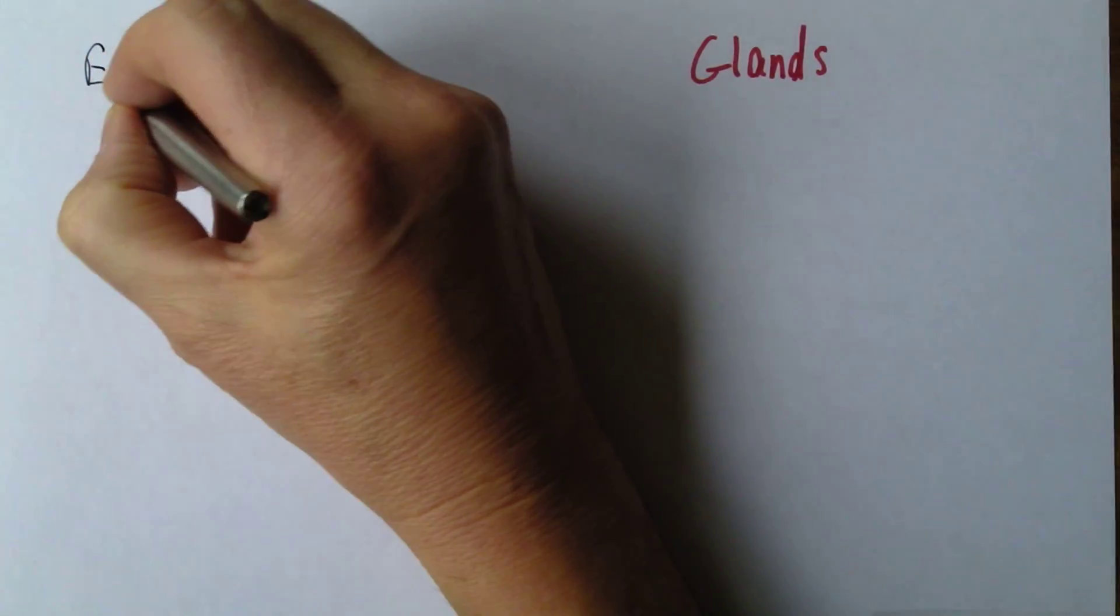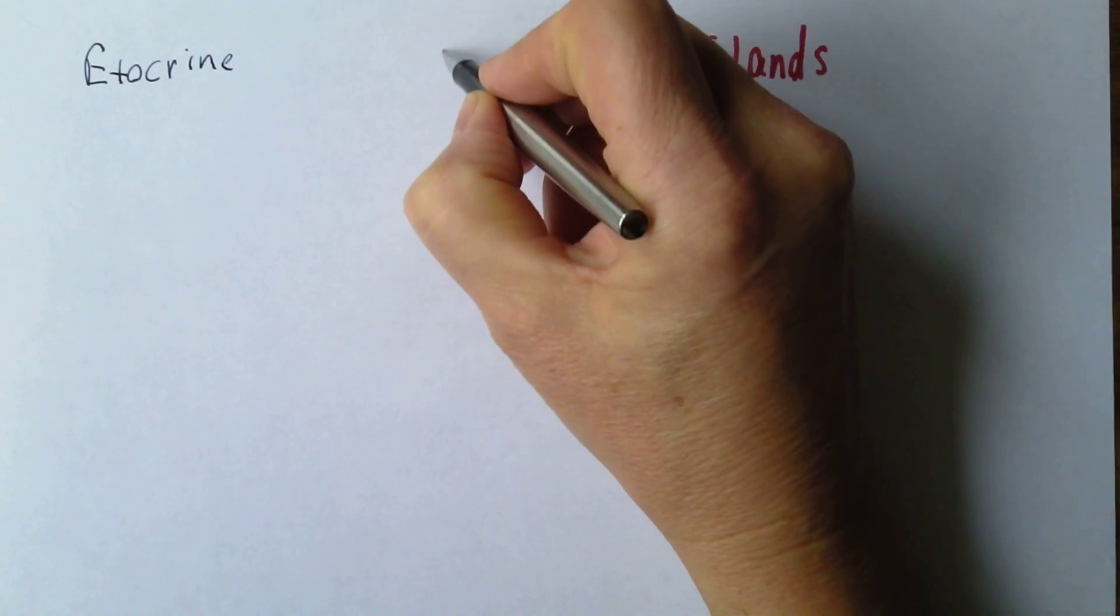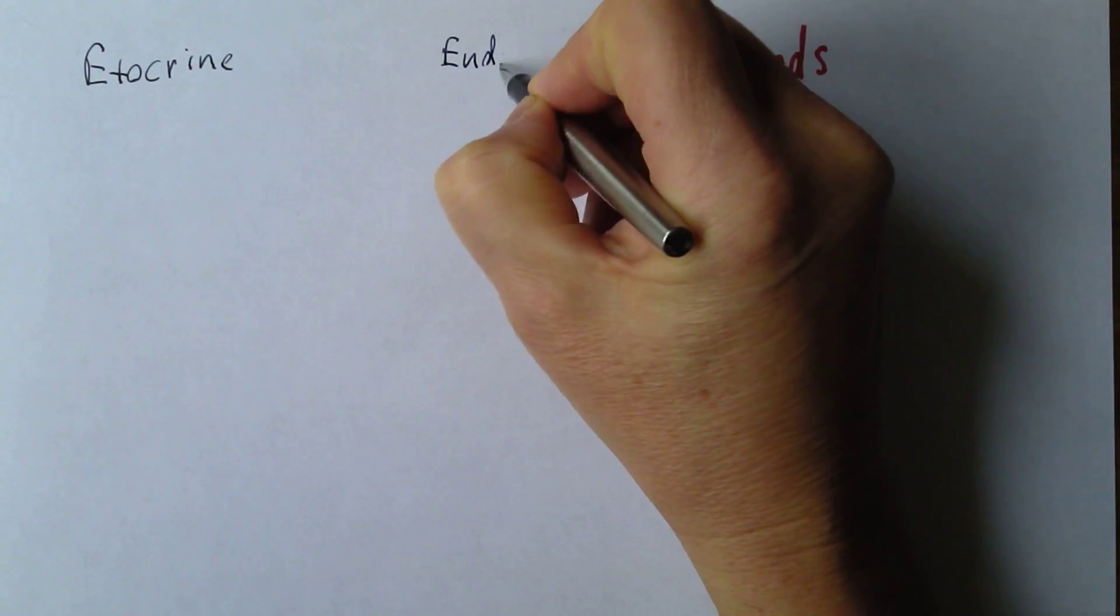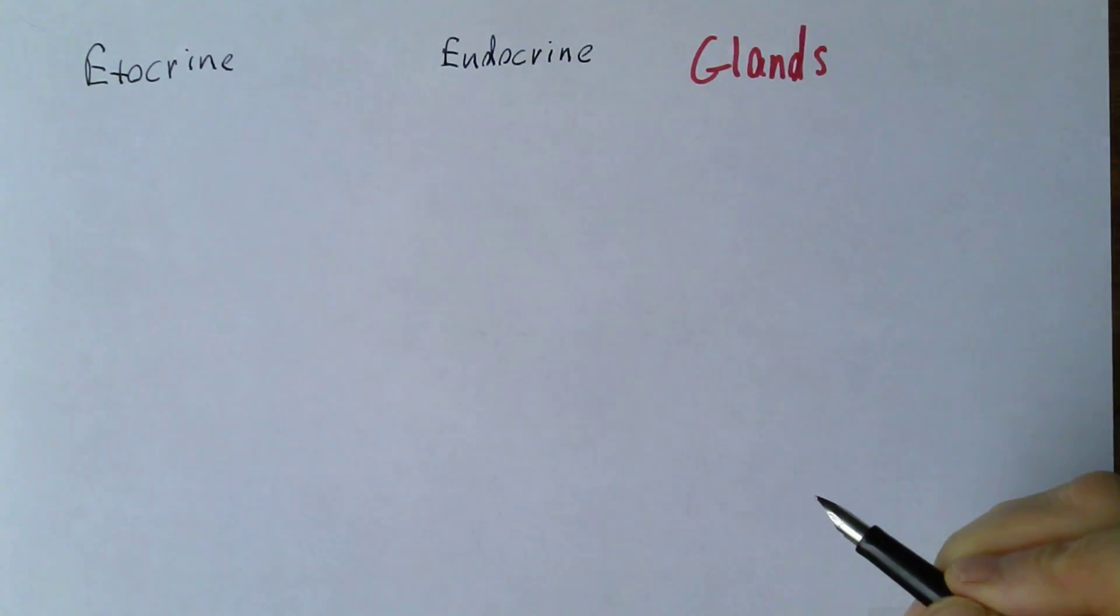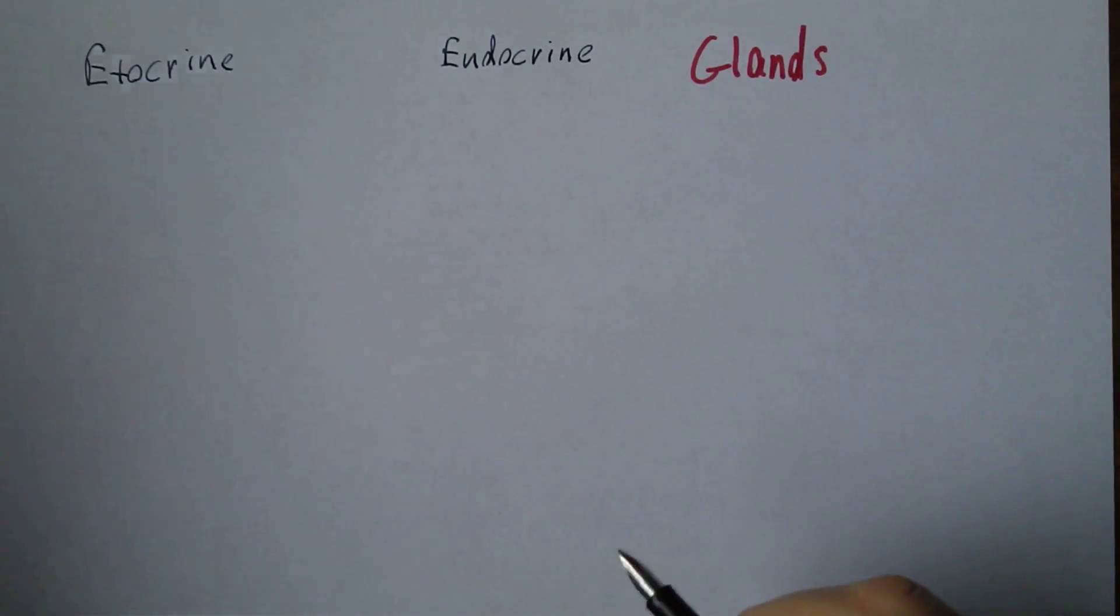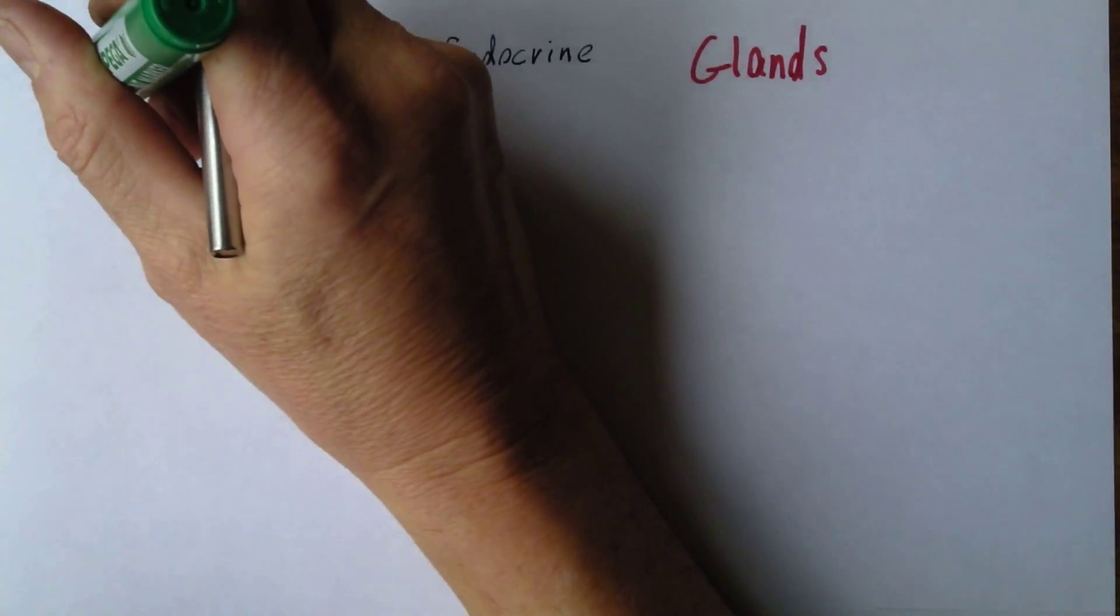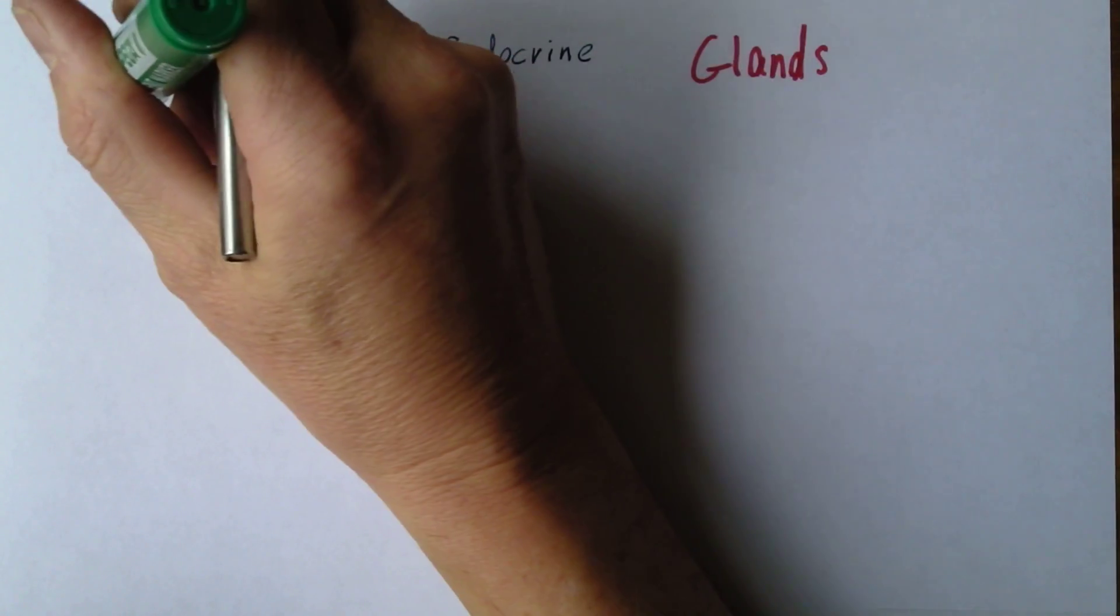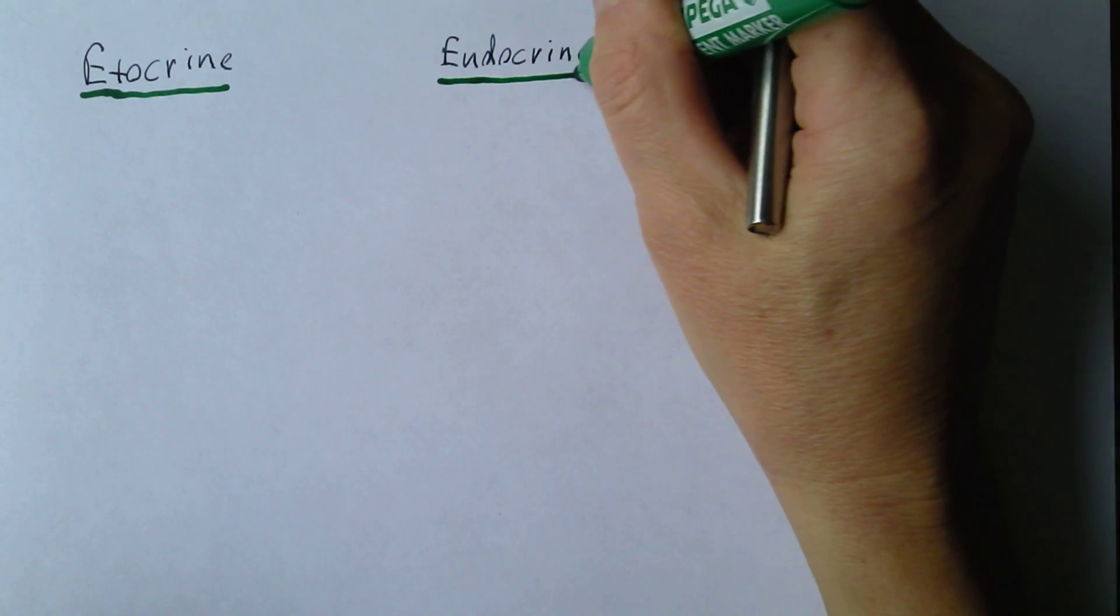There's exocrine and there's endocrine. So all the glands in the body can be classified as endocrine or exocrine. Ex for exit, exocrine. Endo, endo inside.